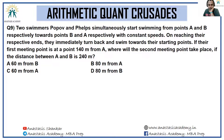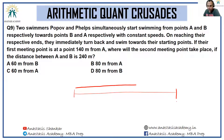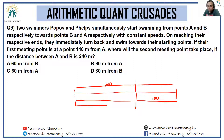Two swimmers Popov and Phelps simultaneously start from points A and B respectively, swimming toward each other at constant speeds. On reaching the far end they immediately turn back. The first meeting point is 140 meters from A and 100 meters from B, so the total track length is 240 meters. By the time they meet for the first time they have cumulatively covered the track once.